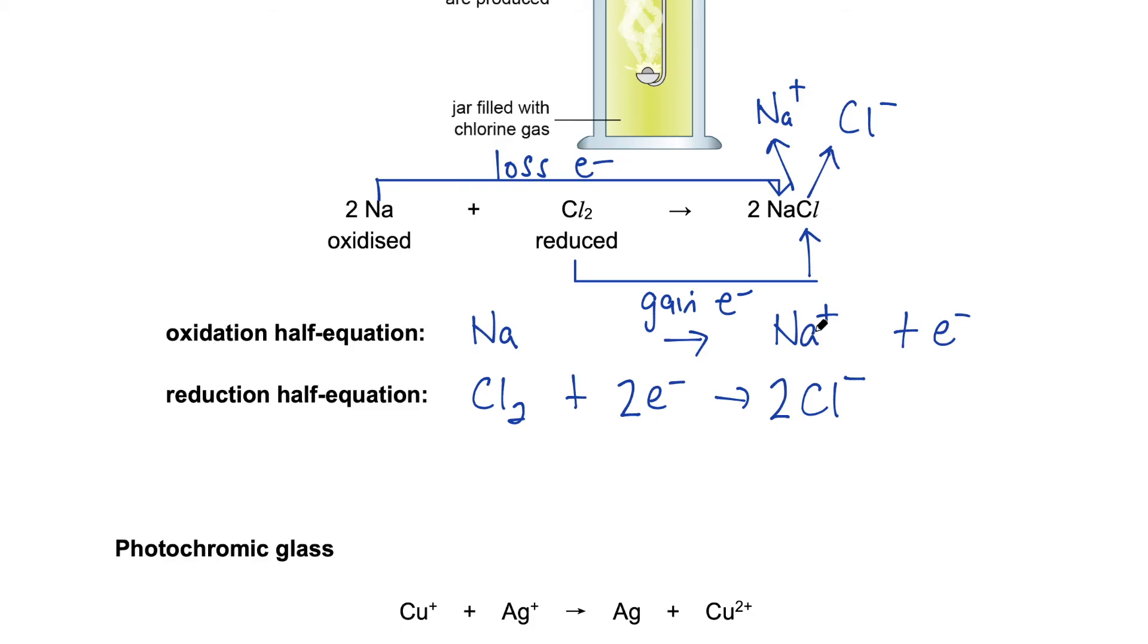So what I've written here is the half equation. Sodium losing electron, so this is oxidation. Chlorine gaining electron, so this is reduction. So sometimes, this may be referred to as ionic equations as well. Whenever possible, we try to add in the state symbols. Over here, I just leave it out because I just want you all to understand how the electrons are moving around.